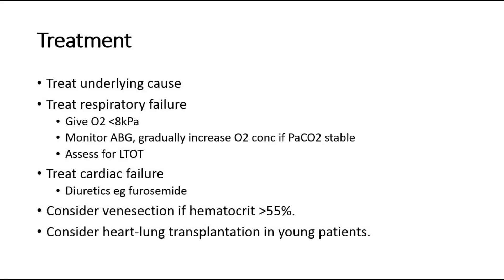Besides this, we also treat the cardiac failure with diuretics such as furosemide, and another alternative drug is spironolactone. We also consider venesection if the hematocrit is too high — more than 55% — and consider heart-lung transplantation if the patient is young.